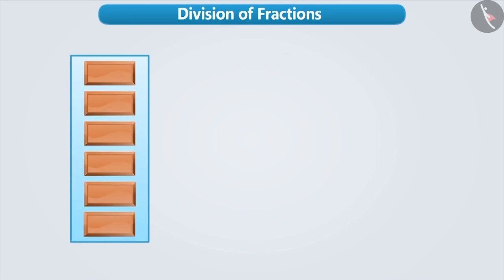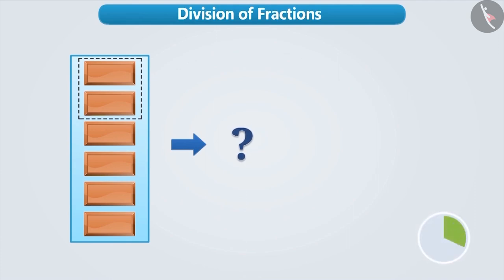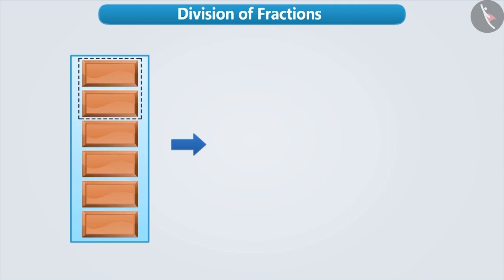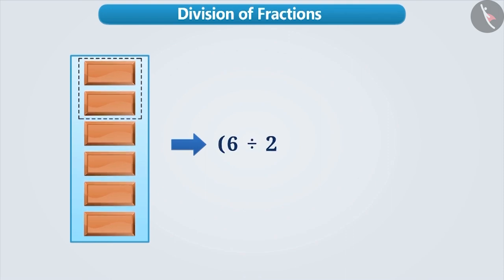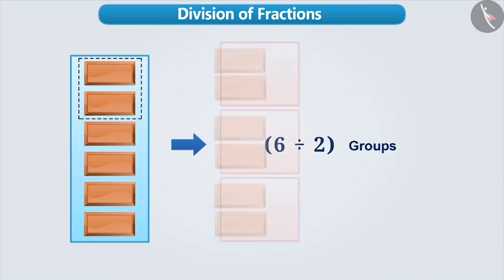Suppose you have six chocolates. If you had to make groups of two chocolates, then how many groups would you be able to make? If you want to make groups of two chocolates, then you can make six divided by two. So three groups can be made.